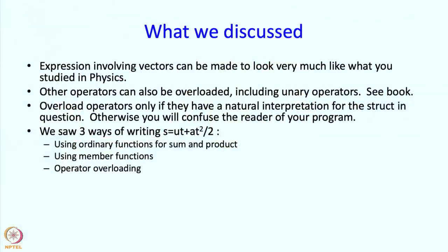So I just want to point out that we saw three ways of writing s equal to ut plus habit square. Using ordinary functions for some end product, using member functions and operator overloading. And I guess you would probably agree with me that operator overloaded looked very very natural. The next topic is going to be access control and classes.